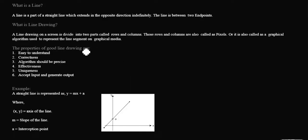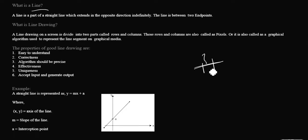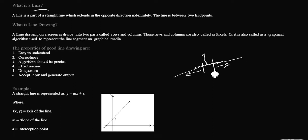Before understanding what exactly the line drawing algorithm is, first, what is a line? A line is a part of a straight line which extends in the opposite direction indefinitely. This line is going to be extended indefinitely in both directions. The line is present in between the two endpoints.